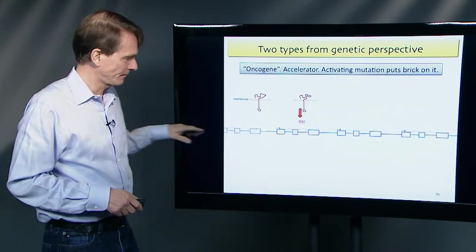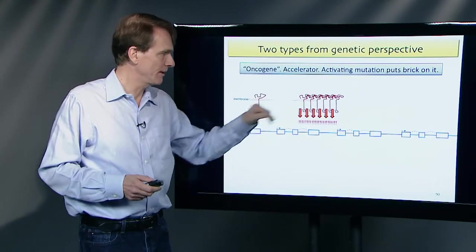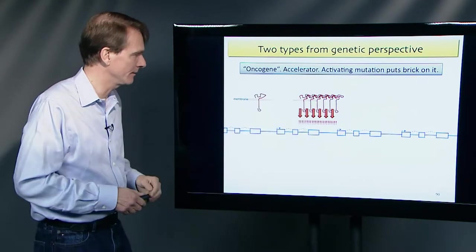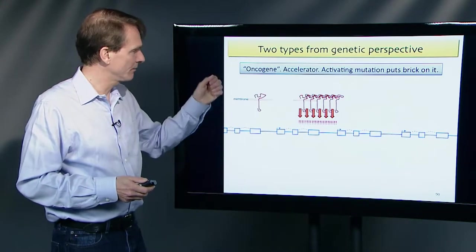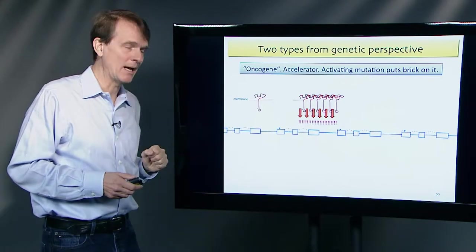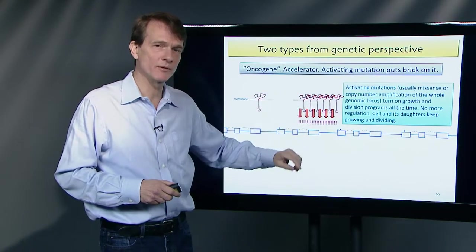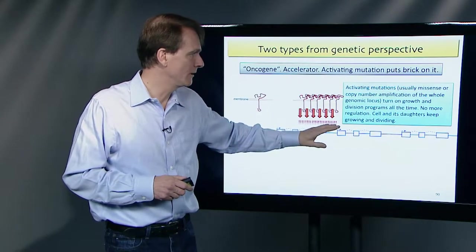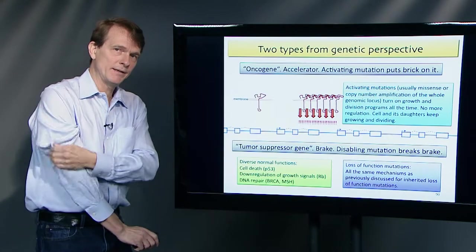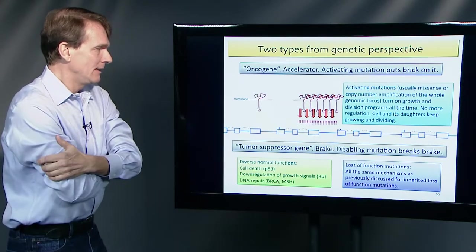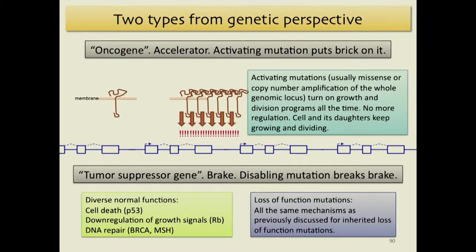Activating mutations turn on growth and division programs all the time — there's no more regulation of growth and division, and the cell and its daughters keep growing and dividing. The other class of cancer gene is the tumor suppressor gene — that is a brake. A disabling mutation breaks the brake, and when you break the brake, you can go. That's what happens with tumor suppressors.